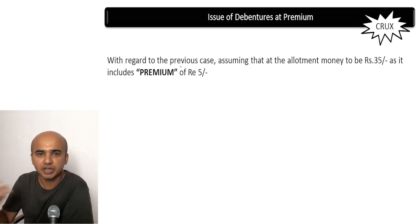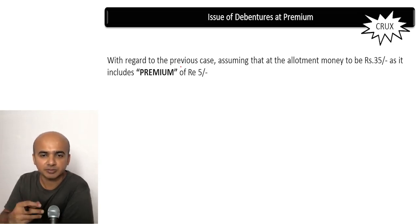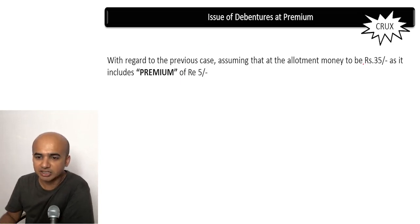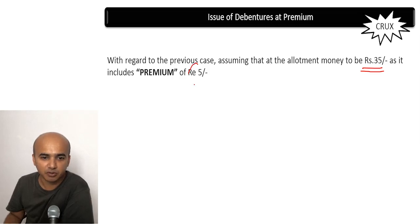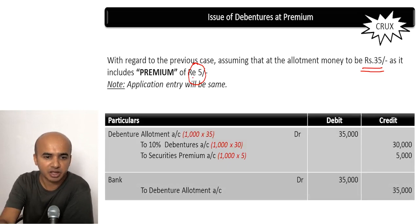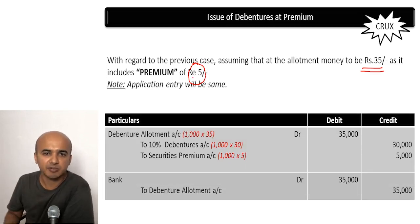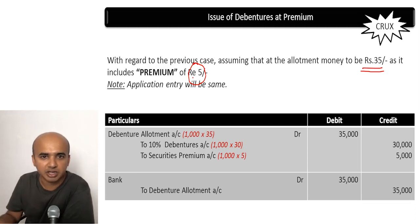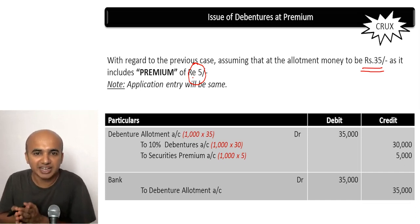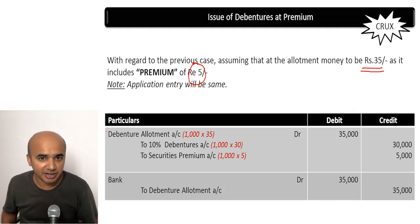Let us look at this example. We are continuing the same example considered for issue of debentures at par, but the only change is that allotment money will now be rupees 35 instead of rupees 30 because there is a premium of rupees 5 per debenture. The application entry will remain the same because there is no change in application — we receive application money and transfer it to debentures. But in the case of allotment money, we are collecting premium at the allotment stage, so we have to be very careful while passing the due entry.